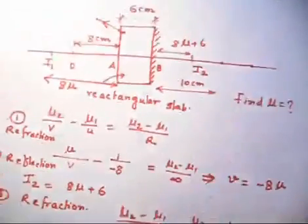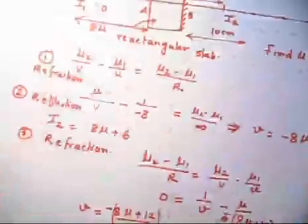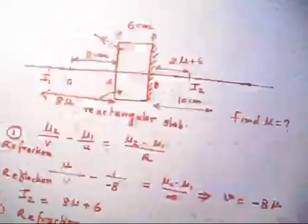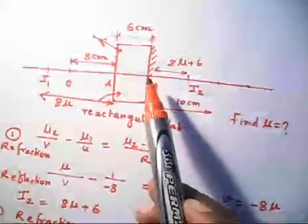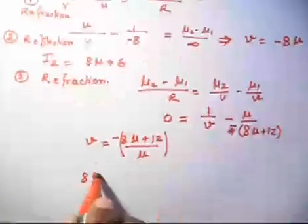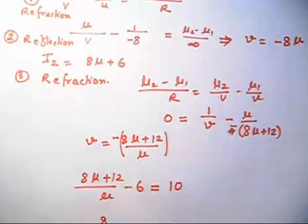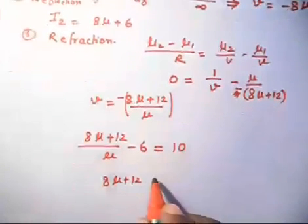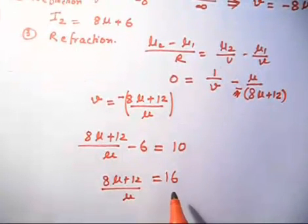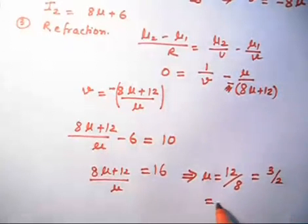V is negative, meaning the final image is formed on the left side of surface 1. The distance from that surface is (8μ + 12)/μ, and subtracting the slab thickness of 6 gives the distance from the object face. This is given as 10 centimeters, so: (8μ + 12)/μ − 6 = 10. Solving: 8μ + 12 = 16μ, so 8μ = 12, giving μ = 12/8 = 3/2 = 1.5.